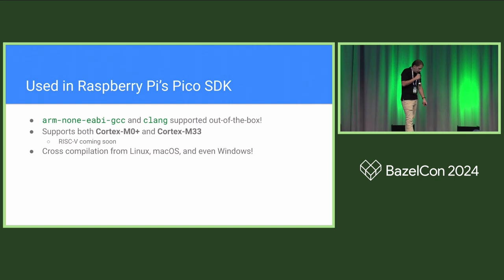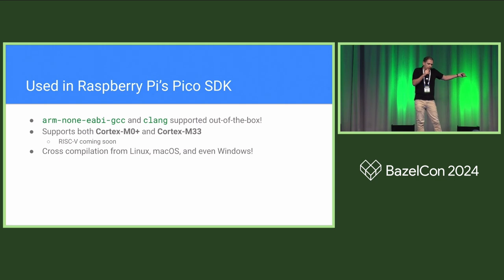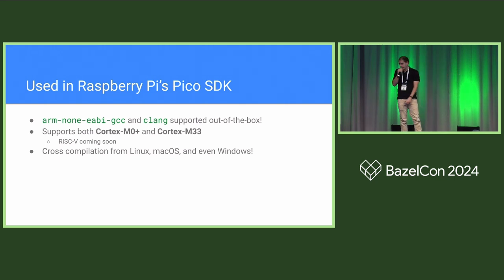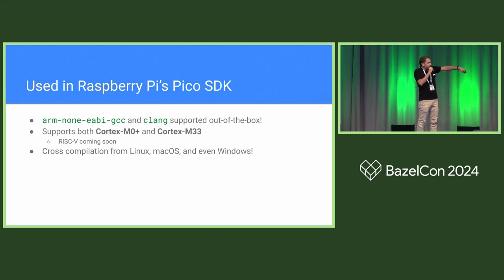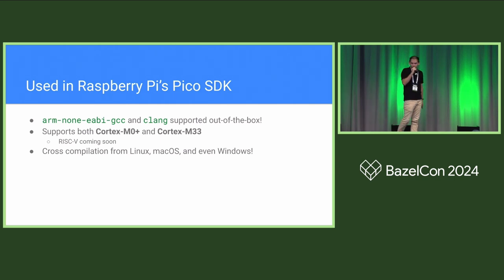We also rolled this out to Raspberry Pi's Pico SDK. The use case here is providing a pre-canned experience: you grab the Raspberry Pi Pico SDK, try to build it with Bazel, and you get toolchains out of the box. Because the last thing you want is someone trying out your project and they have an old version of a toolchain or are missing the right toolchain — for example, ARMNUNEABIGCC. If they don't have that installed, they'll have issues compiling for ARM. So we have vendor toolchain configurations for both ARMNUNEABIGCC and Clang, supporting both Cortex-M0 Plus and M33. RISC-V is coming soon. We also support cross-compiling from Linux, macOS, and Windows.